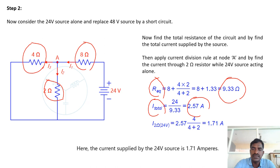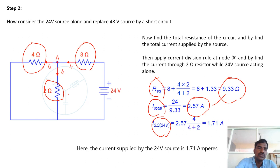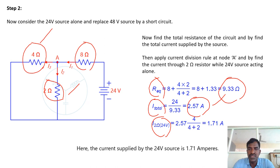Now, find the current through the 2 ohm resistor with the 24 volt source using the current division rule. Current = 2.57 × opposite resistance / (opposite resistance + 2). The resistor parallel to the 2 ohm resistor is the 4 ohm resistor (the opposite resistor). So the current = 2.57 × 4/(4+2) = 1.71 amps. The current supplied by the 24 volt source through the 2 ohm resistor is 1.71 amperes.